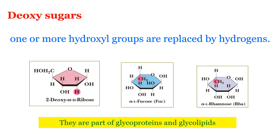In the case of ribose, when the OH group attached to the second carbon is replaced with hydrogen, we get deoxyribose. You already know the significance of deoxyribose — it is an important constituent of DNA, the genetic material and nucleic acid. Other such deoxysugars include fucose, rhamnose, etc. These deoxysugars are integral parts of glycoproteins and glycolipids.